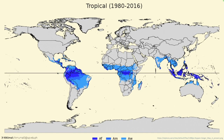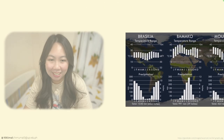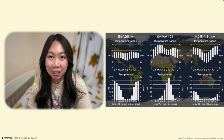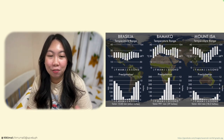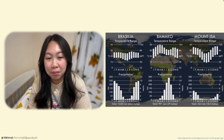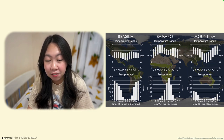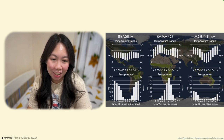The largest areas of the savannah are found in Africa, South America, Australia, India, Myanmar, Thailand, and Asia, and in Madagascar. It is also found in isolated strips in southern Mexico, some Caribbean islands — in particular Cuba — and in southern Florida. Depicted here is the annual temperature and precipitation of the savannah regions. There are Brasília, which is the capital of Brazil; Bamako in Mali, from the continent of Africa; and Mount Isa in Australia.